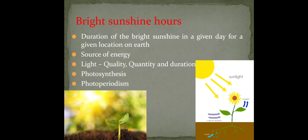Duration refers to how long you are receiving radiation or sunlight in a particular day. That is most important because there are different kinds of plants based on duration: long day plants, short day plants, and neutral day plants, because duration can influence your flowering. Not only photosynthesis — almost all metabolic processes will be dependent on your light.